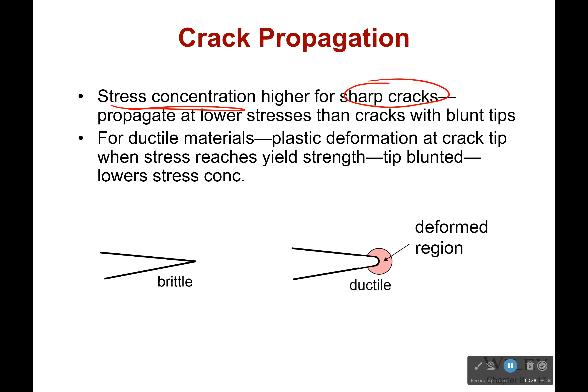The great thing about ductile materials is that yes, a crack could be present, but as soon as it's stressed and that stress gets concentrated at that edge, it's actually going to deform the tip of the crack and blunt it. That will actually lower the stress concentration, which is why ductile materials fail later. There is significant plastic deformation right at the tip which reduces the stress concentration. We want that — that's a good thing, at least in most cases.